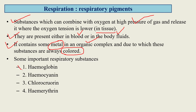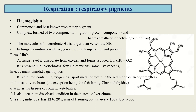Some important respiratory pigments are hemoglobin, hemocyanin, chlorocruorin, and hemerythrin. The first respiratory pigment is hemoglobin, which is the commonest and best known. It is complex in form and made of two components: one component called globin, which is a protein component, and a second component called heme, that is the prosthetic or active group of iron.